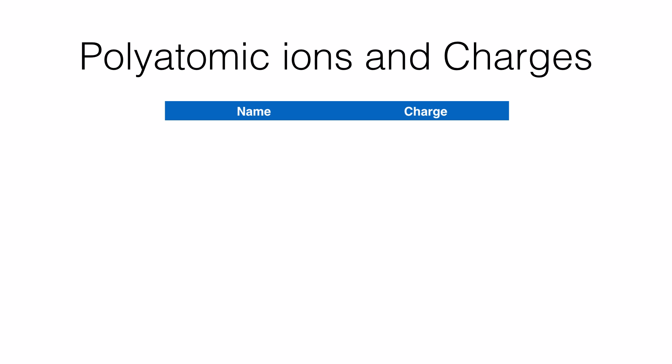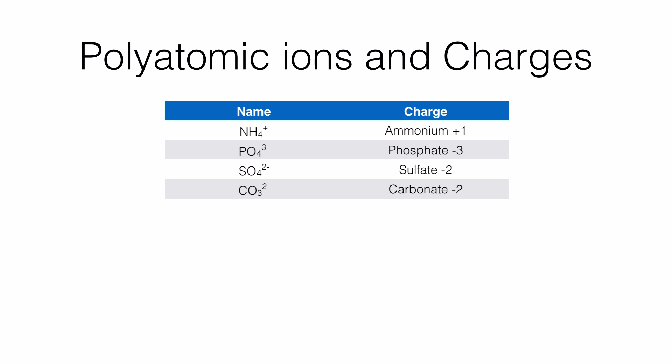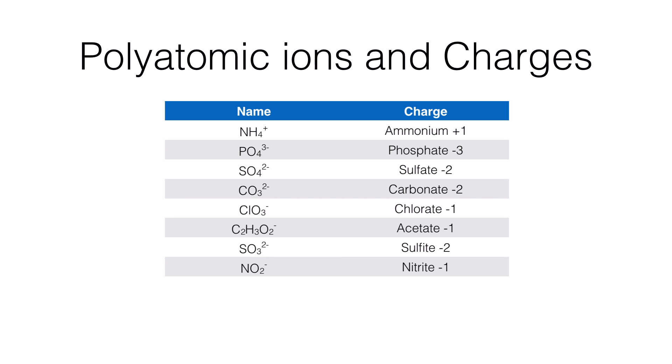For polyatomic ions, you need to learn the names, formulas, and charges. NH4+ is the ammonium ion, with a valency of plus 1 — the only polyatomic ion with a positive charge. All other polyatomic ions have negative charges: phosphate PO4³⁻, sulfate SO4²⁻, carbonate CO3²⁻, chlorate ClO3⁻, acetate C2H3O2⁻ (also written CH3COO⁻), sulfite SO3²⁻, nitrite NO2⁻, phosphite PO3³⁻, and bicarbonate or hydrogen carbonate HCO3⁻.